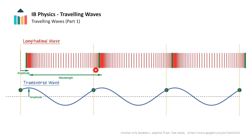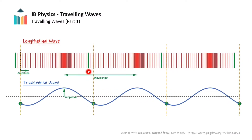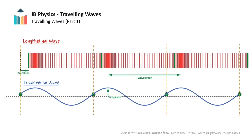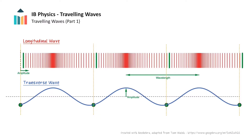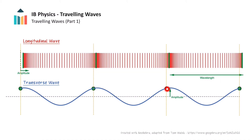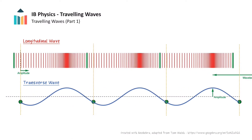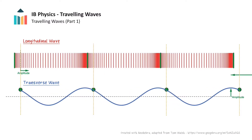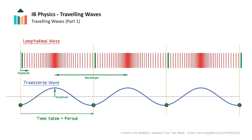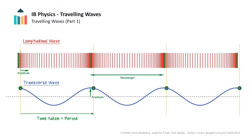From this animation, watch how in the time it takes for one of the green lines of the longitudinal wave to complete one full oscillation, a compression in the longitudinal wave has travelled a full wavelength. Similarly, for the transverse wave, one full oscillation of one of the green particles in the transverse wave takes exactly the same time as a crest in the transverse wave to travel a full wavelength. The time that it takes for the wave to move a distance of one wavelength is called the period for the wave, and this equals the period of the individual oscillations.